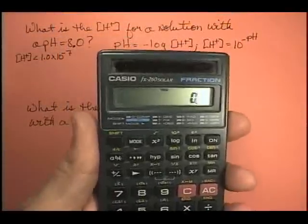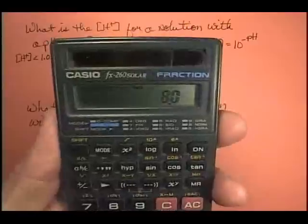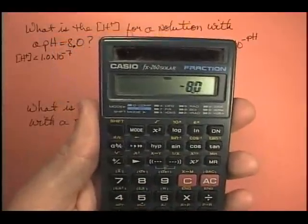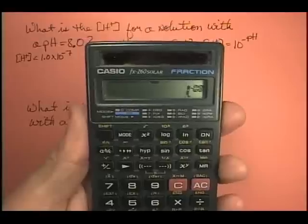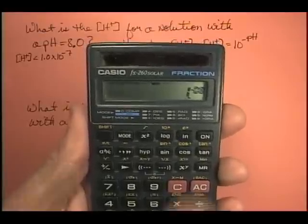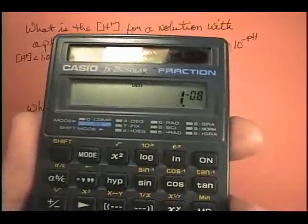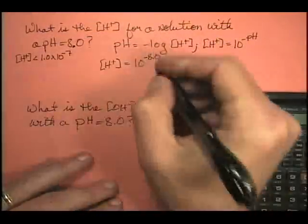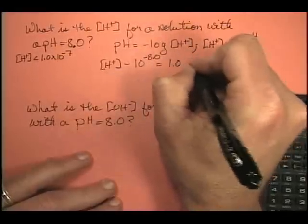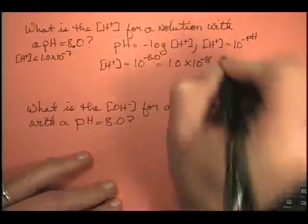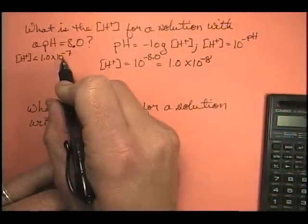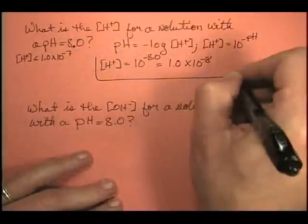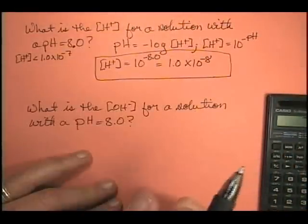I'm going to put in 8.0 and make it negative using the plus/minus key. Then I'll hit second function and then 10 to the X, and I get 1 times 10 to the minus 8. So this becomes 1.0 times 10 to the minus 8. Is that smaller than 10 to the minus 7? Yes. So that's a reasonable answer for a basic solution. Always do your checks.